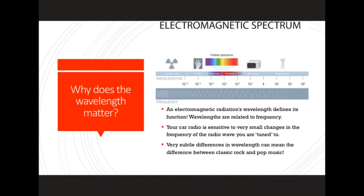Now we're going to talk about why does the wavelength matter. An electromagnetic radiation's wavelength defines its function. From the chart here, you can see that radio waves are generally large waves. Microwaves are just smaller than radio waves, and you can get all the way down to gamma rays, which are really tiny.